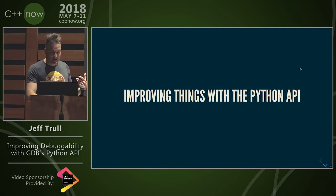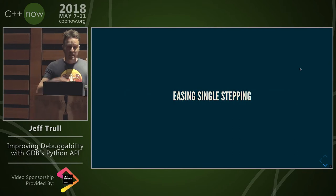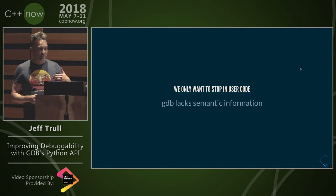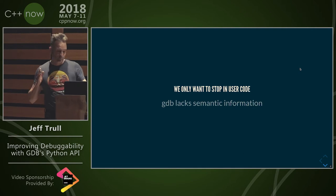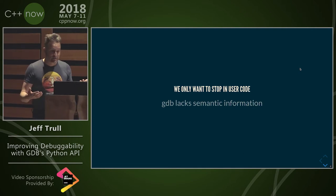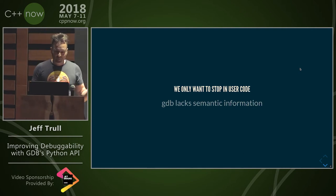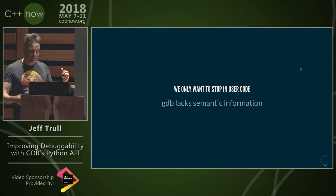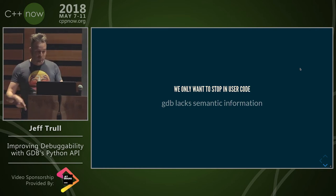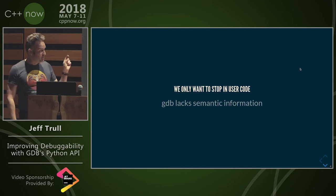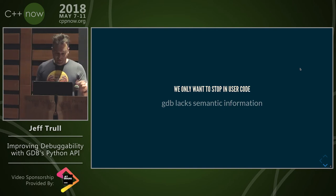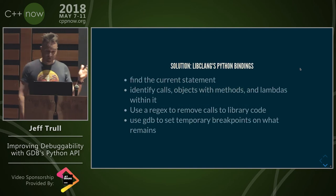We want to use the Python API, which is really powerful in GDB. The first thing we want to do is make single stepping a little bit easier — we only want to stop in user code, and just pretend that all of that templated library code is just one function. Unfortunately, GDB lacks the semantic information necessary to figure out where we need to go. But there is a Python package you can use in GDB's Python API that can give you this semantic information: libclang.